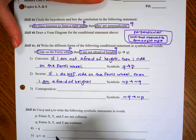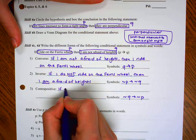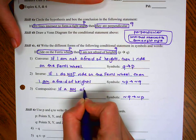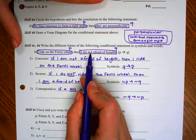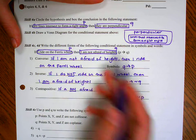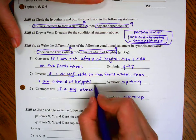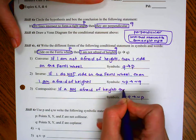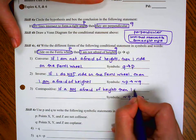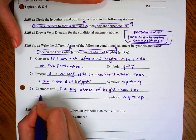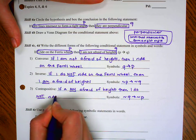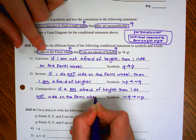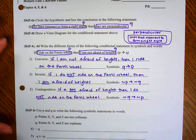Contrapositive, we're switching the order and negating. So if I am afraid of heights, because I got rid of the word not, we're negating some that already have the knots we're taking away. So if I am afraid of heights, then I do not ride on the Ferris wheel. Since it didn't have a not we had to put that in for the negation.